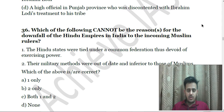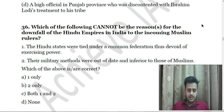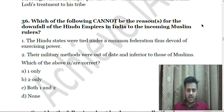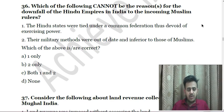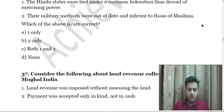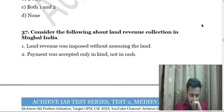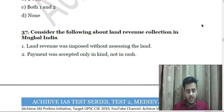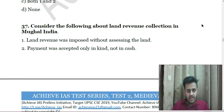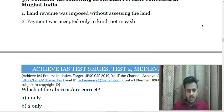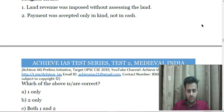Next: Which of the following cannot be the reasons for the downfall of Hindu empires in India to incoming Muslim rulers? First, the Hindu states were tied under a common federation thus devoid of exercising power; Second, their military methods were out of date and inferior to those of Muslims. Next: Consider the following about land revenue collection in Mughal India — First, land revenue was imposed without assessing the land; Second, payment was accepted only in kind and not in cash.